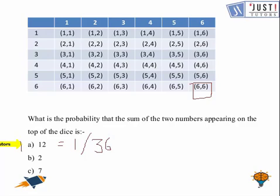Now for the next one, the sum should be 2. So here only this number is going to give me 2, 1 and 1. So again the probability is 1 over 36.